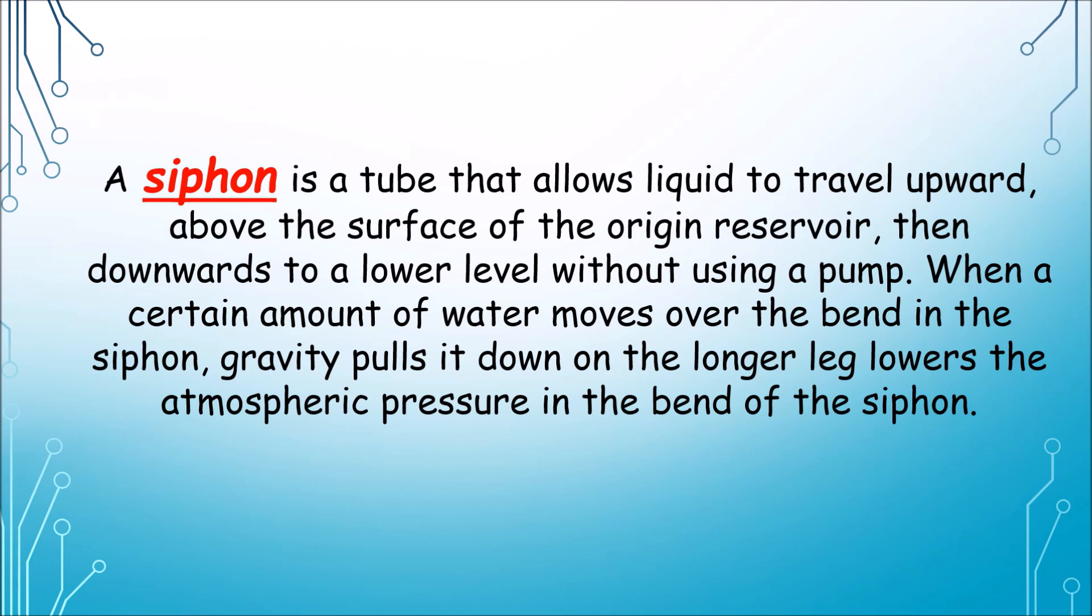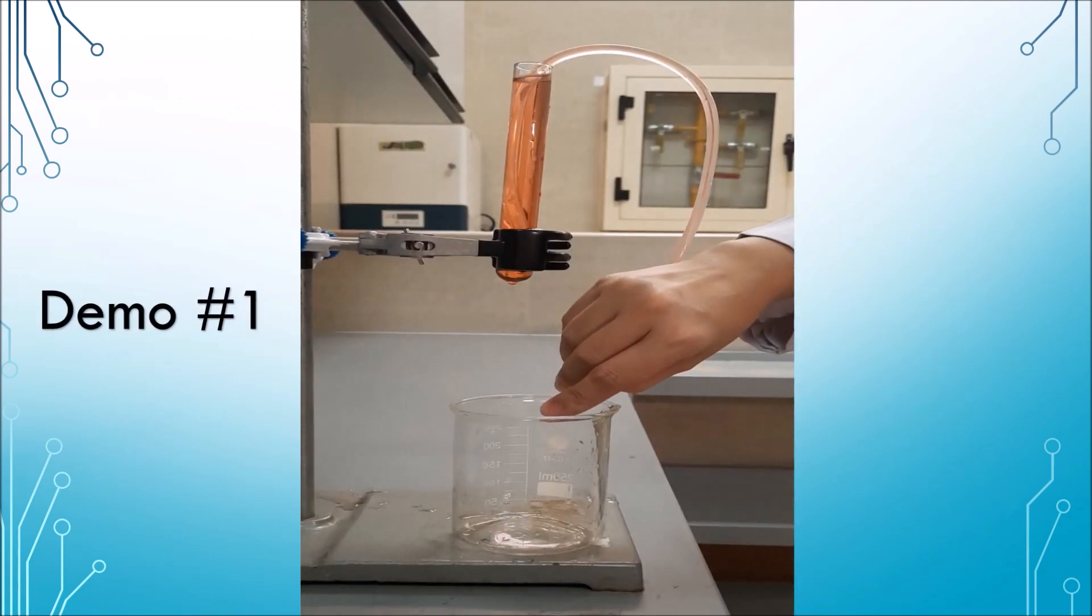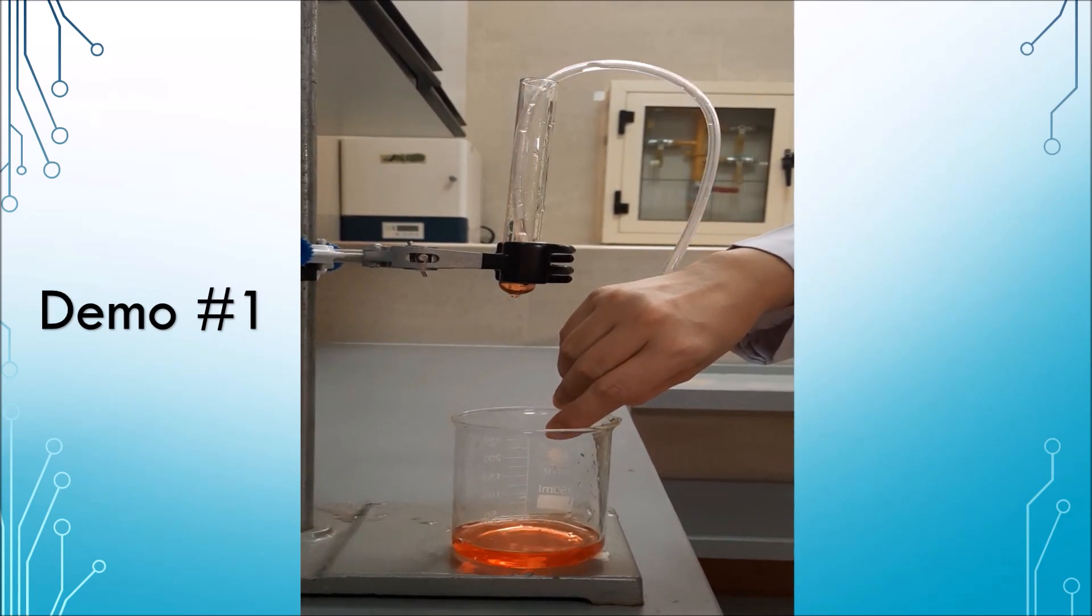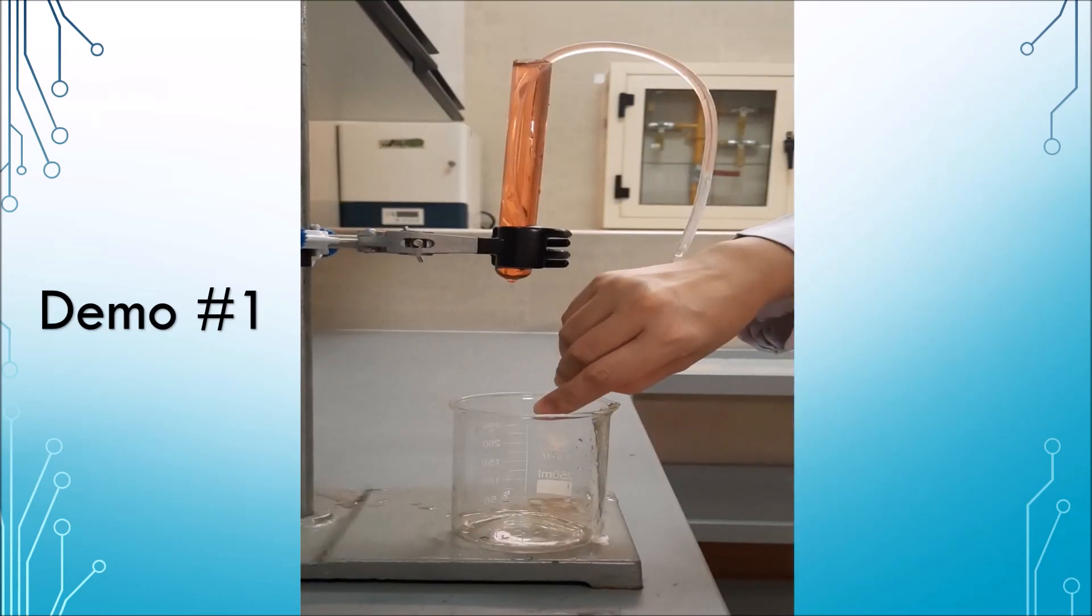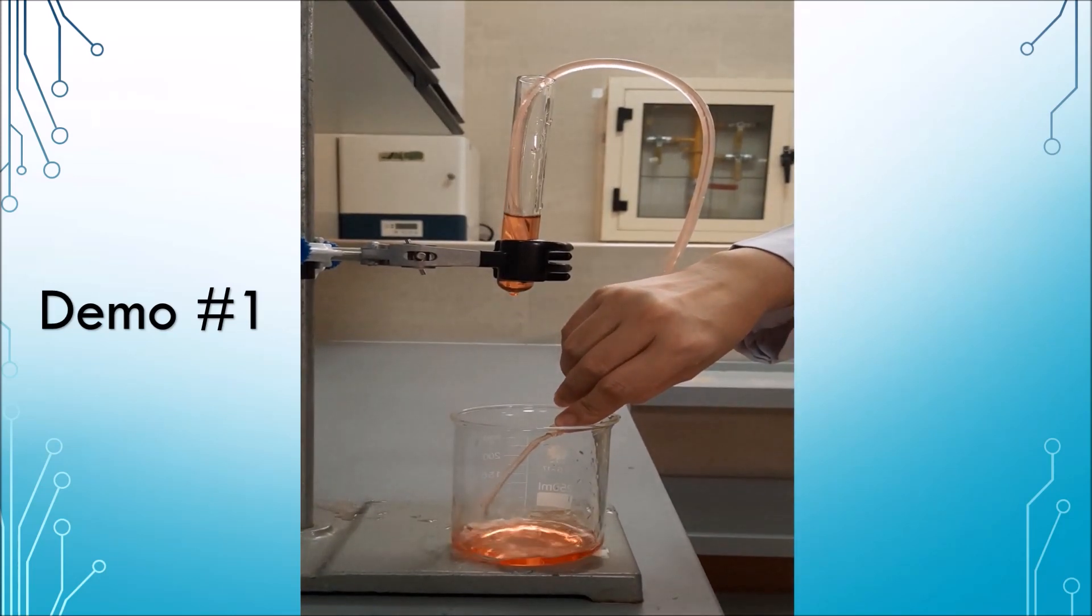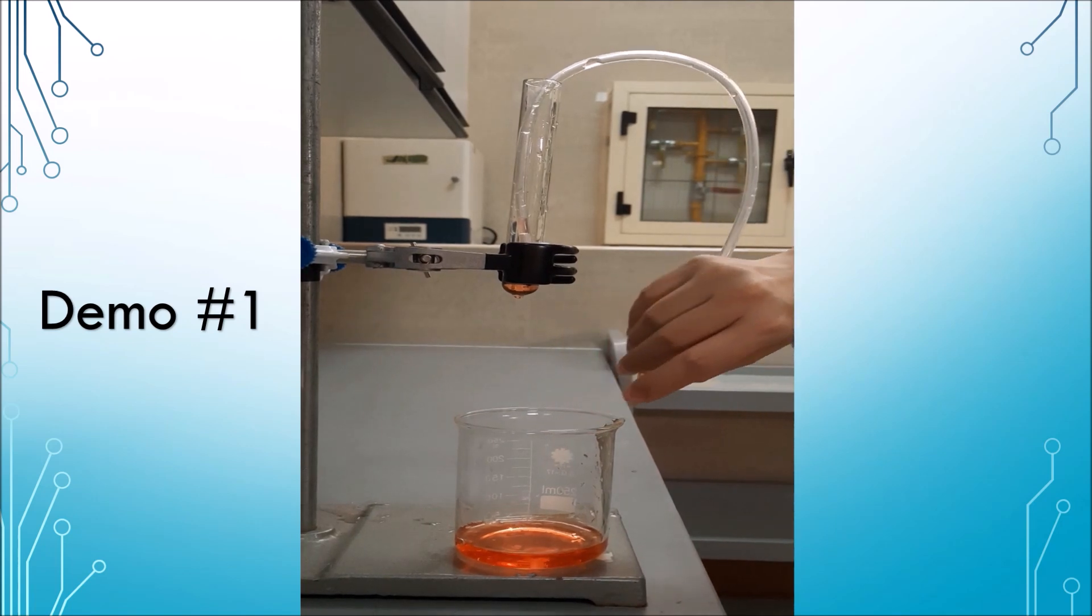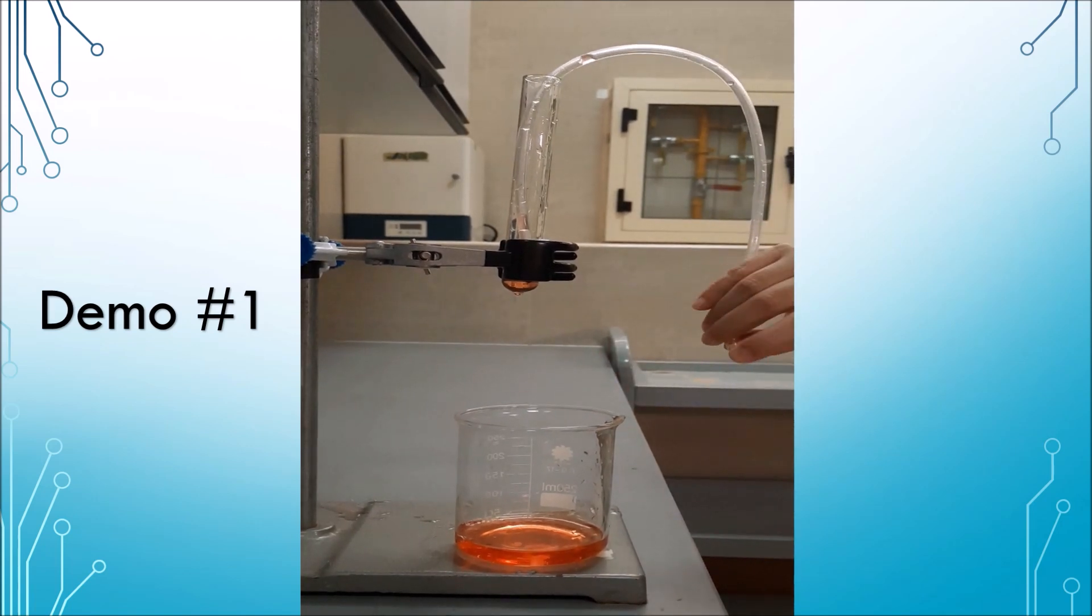In demo number one, the air pressure in the water in the test tube pushes the water into the hose. This water continues to flow into the beaker because of gravity. The vacuum remains and the air pressure in the water in the test tube continues to push the water into the hose.